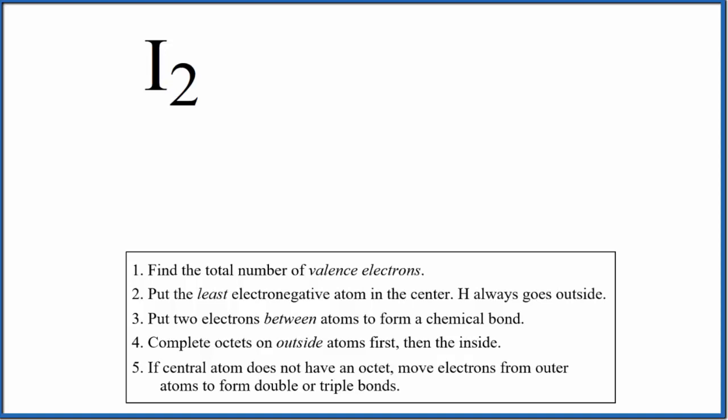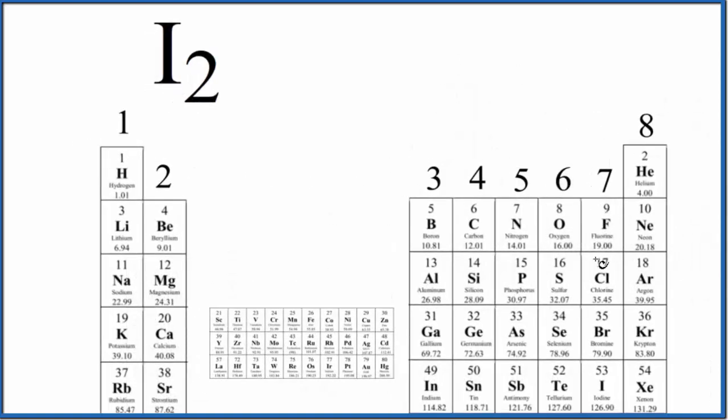The periodic table can help us do that. So we find iodine right here. It's in group 17, sometimes called 7A, and these all have seven valence electrons. And we have two iodines. So seven times two, that gives us a total of 14 valence electrons for the I2 Lewis structure.